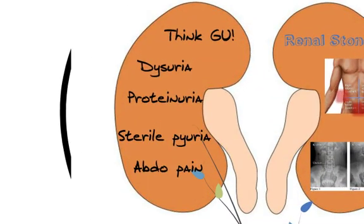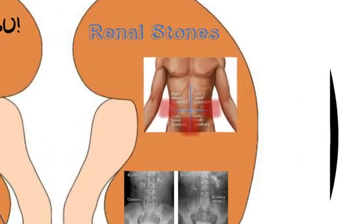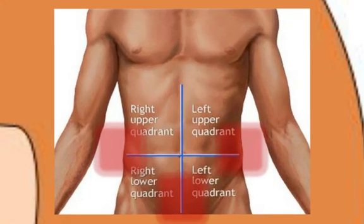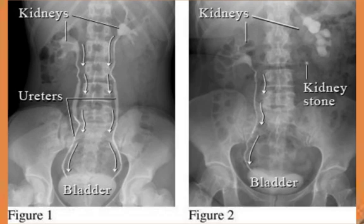The genitourinary system, including the kidneys, can be the cause of an acute abdomen. Suspect these whenever there is abdominal pain and urinary symptoms such as dysuria (pain on urinating), anuria (passing no urine), haematuria (blood in urine), or proteinuria (protein in the urine). Loin to groin pain, or renal colic — excruciating spasms of pain — are a telltale sign of renal stones. Obstruction higher up may cause pain that looks like appendicitis, whereas lower down the pain may radiate to the genitalia. This x-ray shows a renal stone stuck in the left ureter.